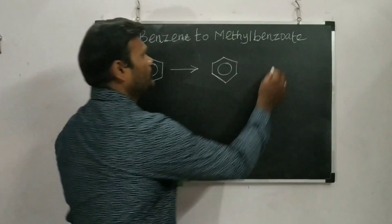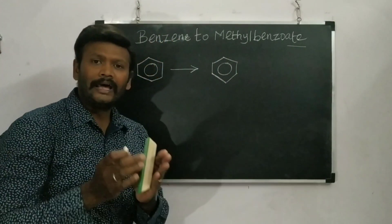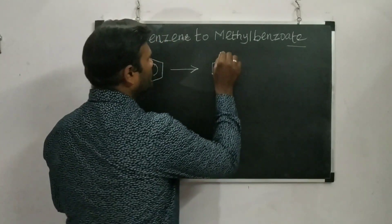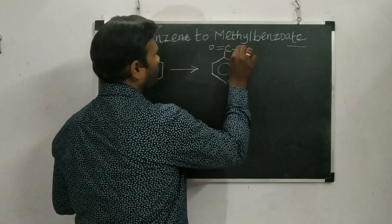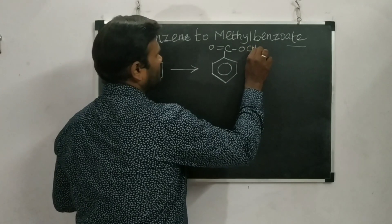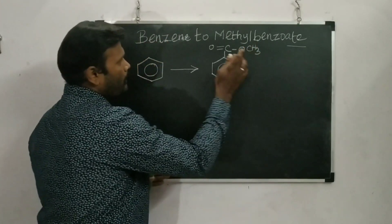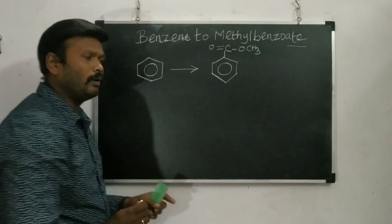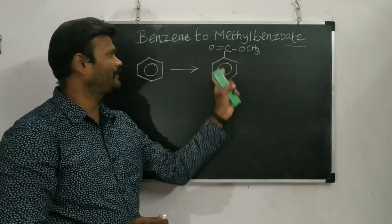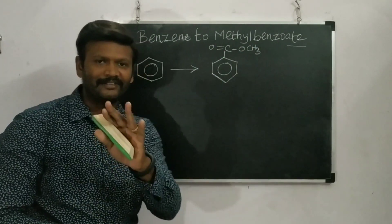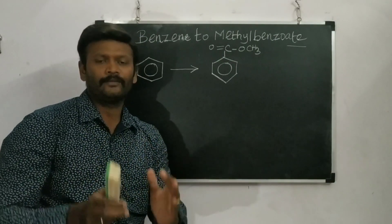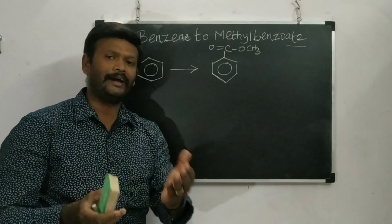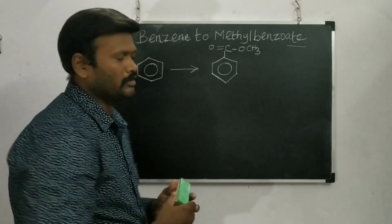So here benzene should be added, so that may be an ester. Here C double bond O is there and OCH3. This is methylbenzoate, C6H5COOCH3. I have to write the reactant as well as the product structure, then only I can start doing the conversion.